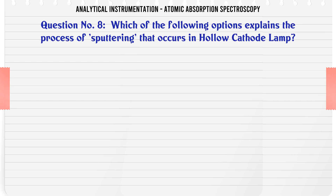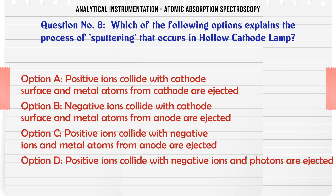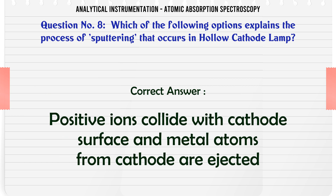Which of the following options explains the process of sputtering that occurs in a hollow cathode lamp? A. Positive ions collide with cathode surface and metal atoms from cathode are ejected. B. Negative ions collide with cathode surface and metal atoms from anode are ejected. C. Positive ions collide with cathode surface and metal atoms from anode are ejected. D. Positive ions collide with negative ions and photons are ejected. The correct answer is: positive ions collide with cathode surface and metal atoms from cathode are ejected.